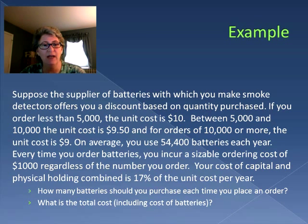Every time we order batteries we incur a sizable ordering cost of $1000, and our cost of capital and physical holding combined is 17% of the unit cost per year. So how many batteries should we purchase each time and what is the total cost?